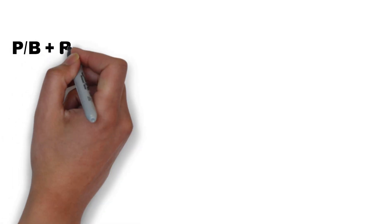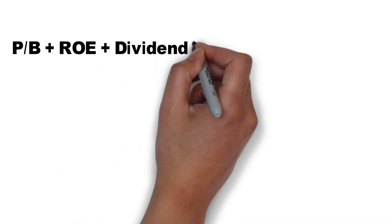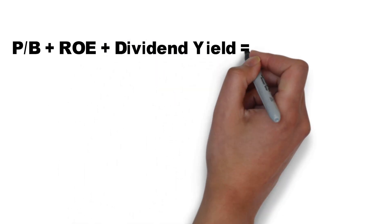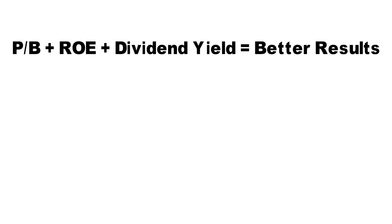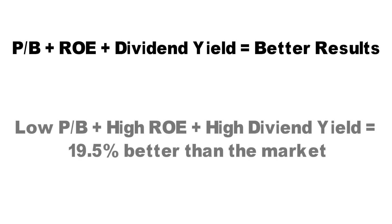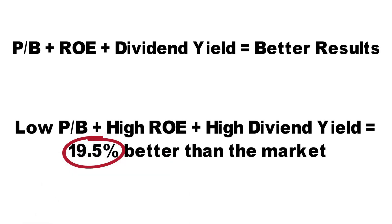An additional complement to the price to book screen is dividend yield. Barclays analysts added high dividend yield to the low price to book and high return on equity screen, and backtests showed this combination outperformed the market by 19.5% over the 10-year period.